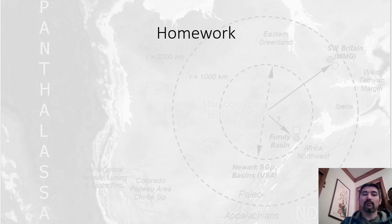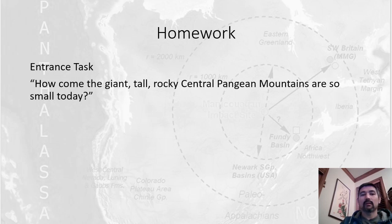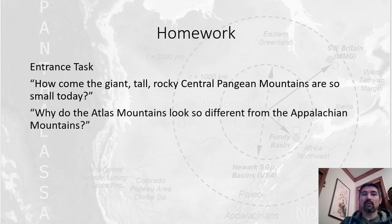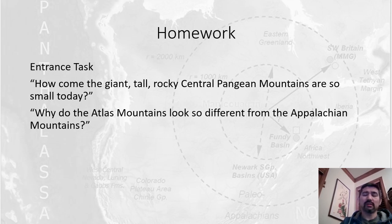For homework, you have three things to do. Number one, your entrance task. Next, how come the tall rocky Central Pangean Mountains are so small today? And three, why do the Atlas Mountains look so different than the Appalachian Mountains? You can do this in your notebook, take a picture, send it to me. You can also type it in on a Google Doc and submit it to Schoology. I'll also open up a folder and you can type in all these answers into the comments as well. If you have any questions, please come visit me during office hours every day from 9:30 a.m. to 10:30 a.m. — there will be a link in your folder for the week. You can also send me an email at sjkwok at sejongacademy.org. Thank you. Peace.